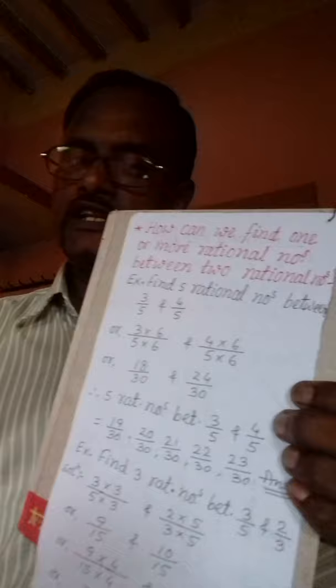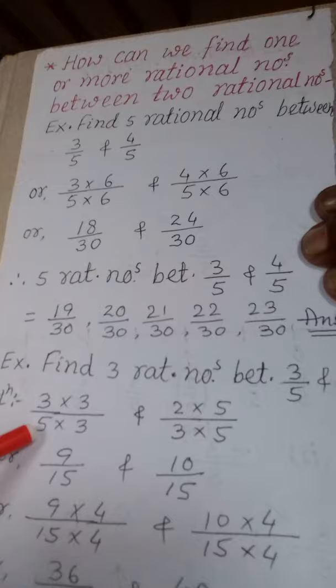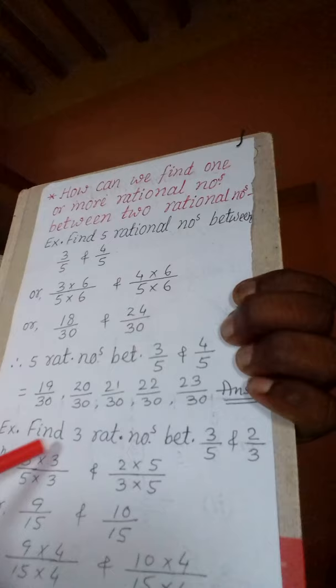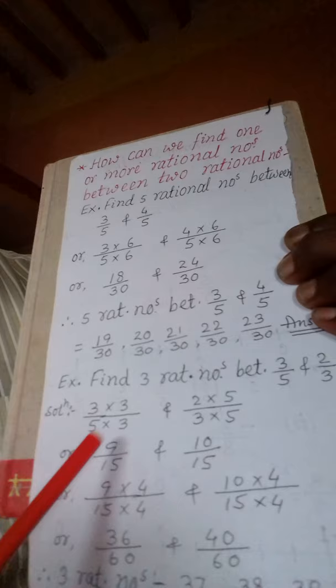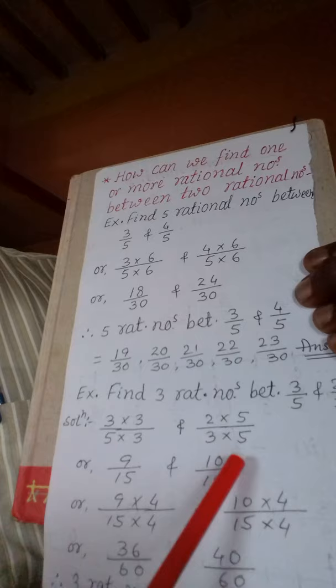जैसा मैं कर रहा हूँ देखिए — यह 3 by 5 है और इसमें second number वाले का denominator 3 है, तो 3 से multiply कर दिया। दूसरा 2 by 3 है, तो इसमें first वाले के denominator 5 से multiply कर दिया। अब आगे number आ जाता है — 9 by 15 और 10 by 15। denominator equal हो गया, लेकिन 9 के बाद 10 है — कोई gaping नहीं।